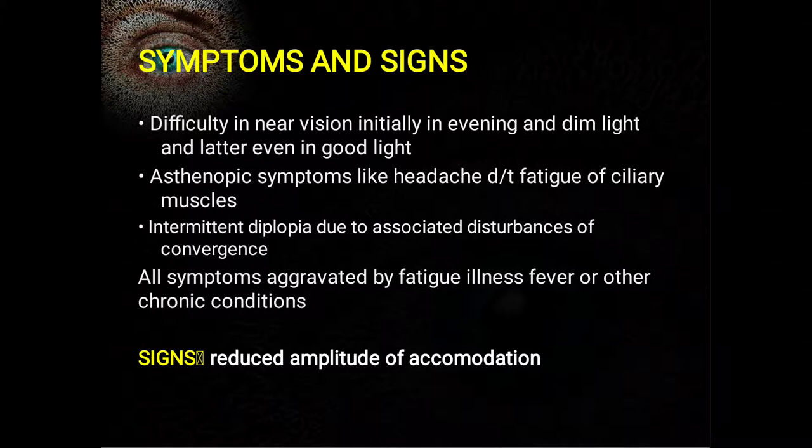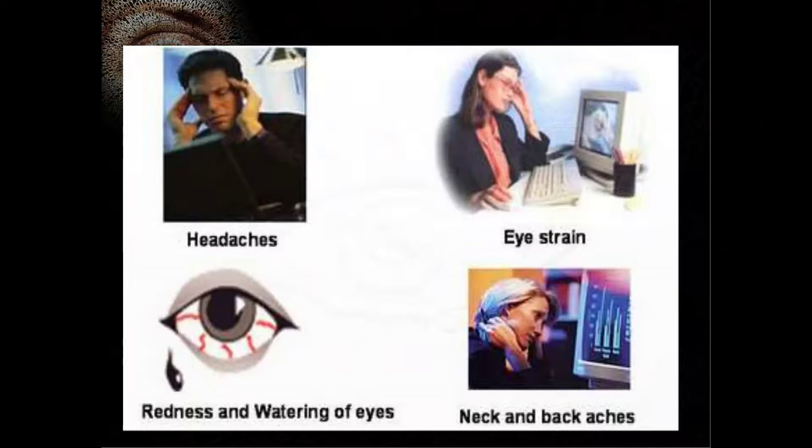There is a reduced amplitude of accommodation which can be checked objectively using Jaeger's chart or Roman test type chart — the patient will not be able to read the N6 or N8 line clearly at 25 centimeters. There may be headaches, eye strain, redness and watering of the eyes, and neck and back aches because the patient has to exert the neck and back to see objects clearly.